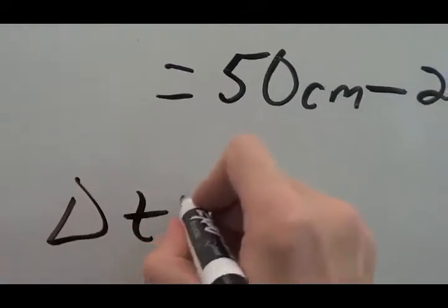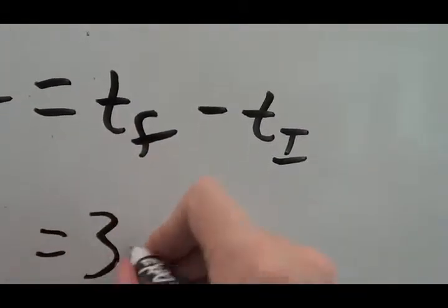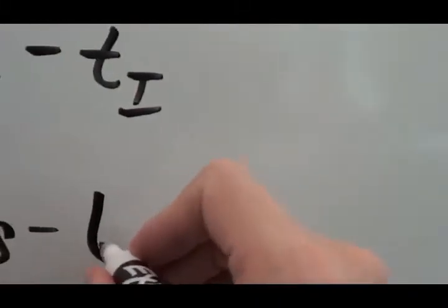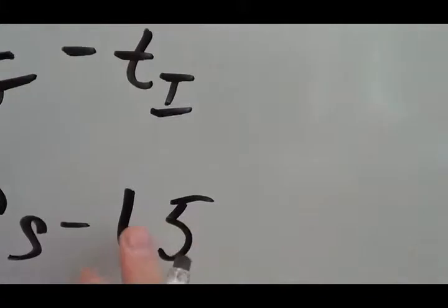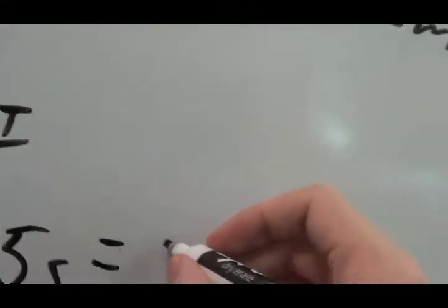Delta t is tf minus ti. The final time, 39 seconds. The initial time, 15 seconds. That's a fine looking one. For a total of 24 seconds.